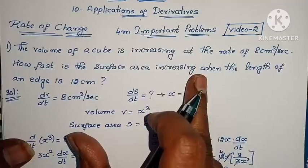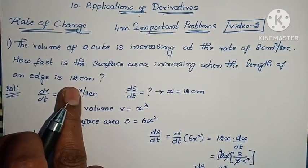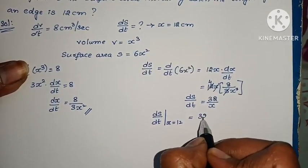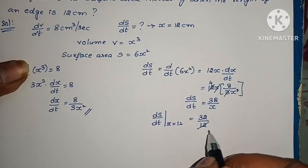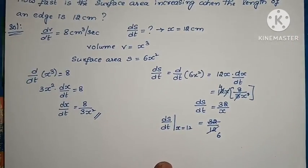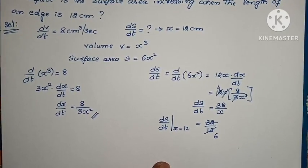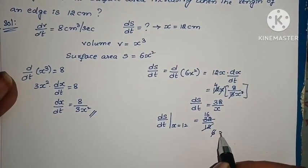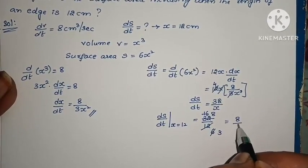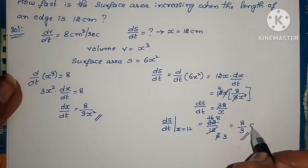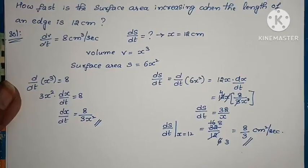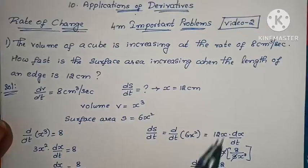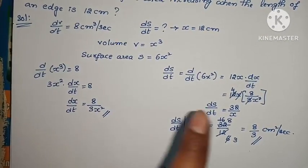We need rate of change of surface area at 12 cm. So dS/dt at x equals 12 is 32 by 12. Cancel to get 8 by 3. The answer is 8 by 3 centimeter square per second. This problem is complete. dV/dt, dS/dt at x equals 12 centimeters.